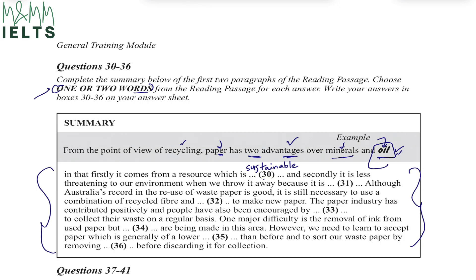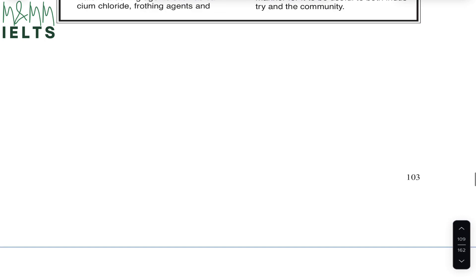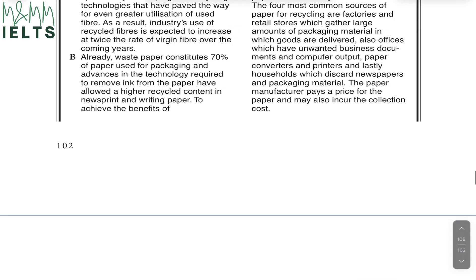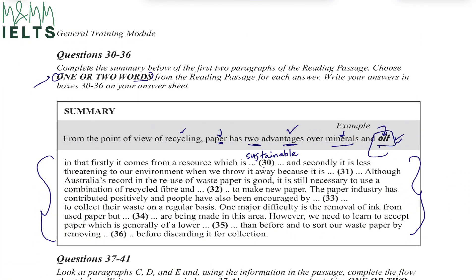Question 31 says: secondly, it is less threatening to our environment when we throw it away because it is dash. Looking at the paragraph: unlike the minerals and oil used to make plastics and metals, trees are replaceable. Paper is also biodegradable, so it does not pose as much threat to the environment when it is discarded. The sentences have been shuffled in the summary, but the answer is clear — number 31 is 'biodegradable.'